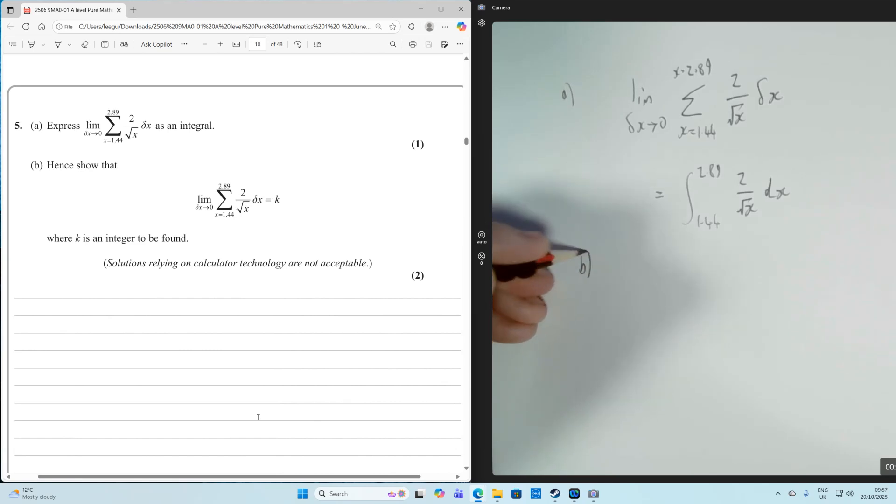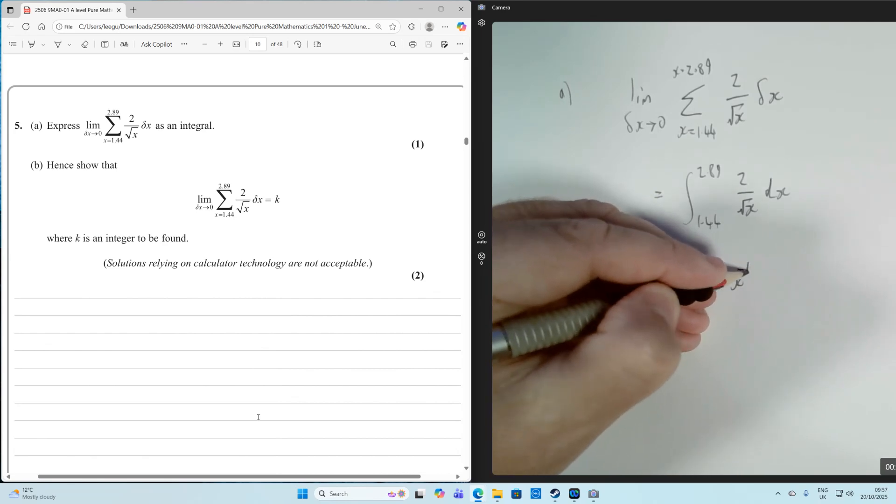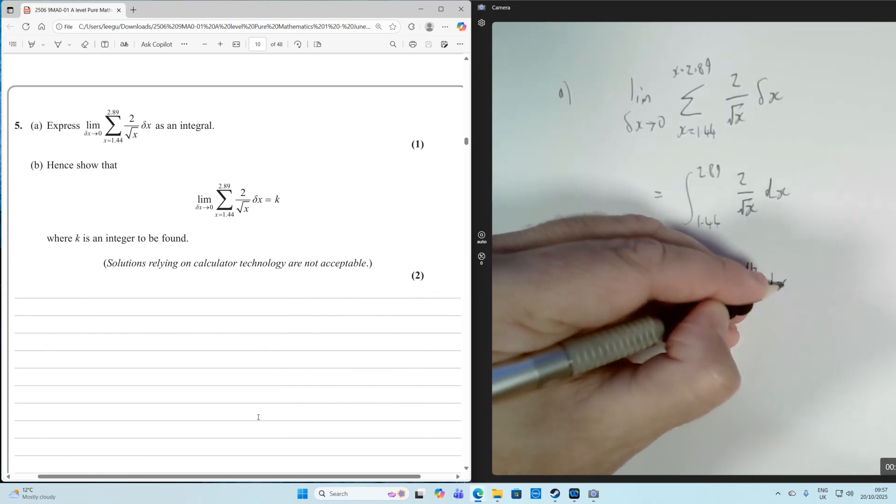Part b is presumably going to be do the integration. Hence show that that is equal to k. So we just got to do this integral now. So we're going to integrate between 1.44 and 2.89.